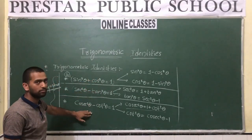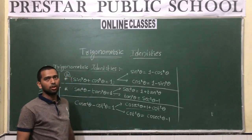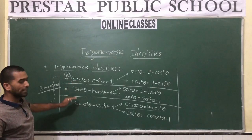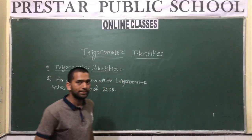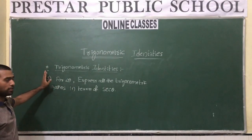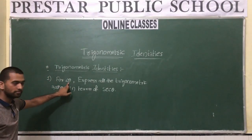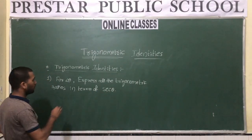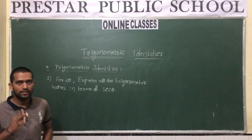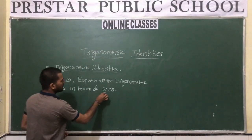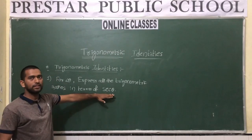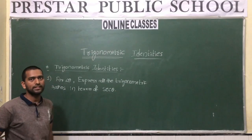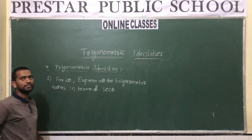You need to memorize these three identities — if you memorize the three main formulas, automatically you will get the remaining ones. Now let us discuss the problems. For angle θ, express all the trigonometric ratios in terms of secθ. We have six trigonometric ratios in total, and since secθ is already one of them, we need to convert the remaining five using trigonometric identities.